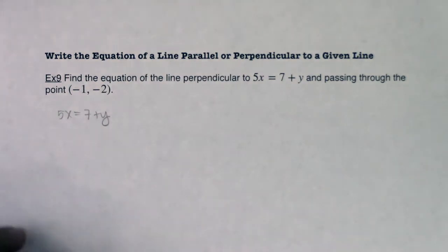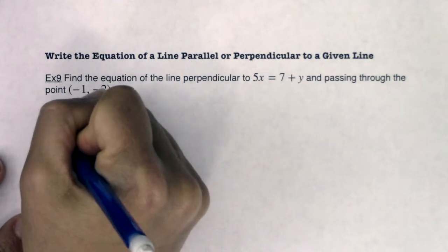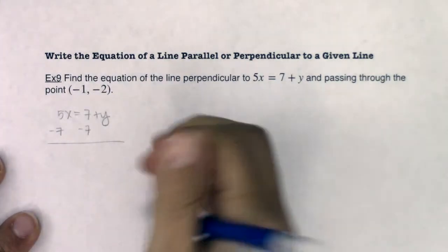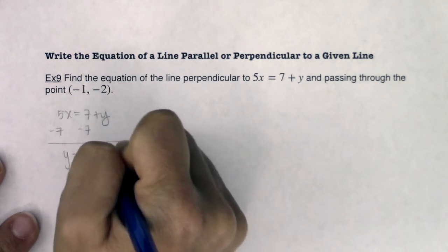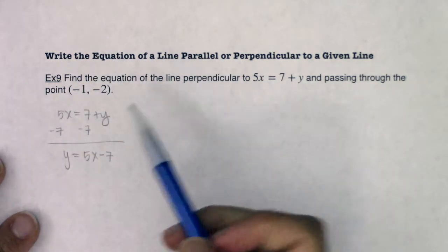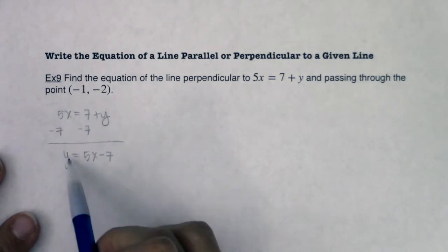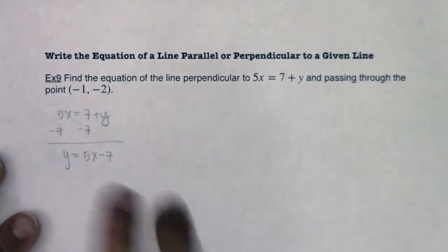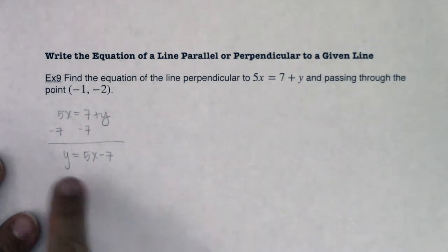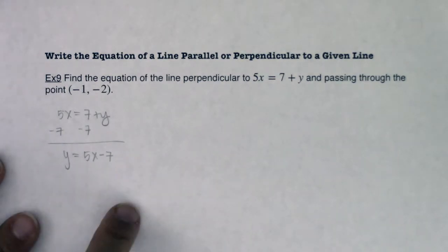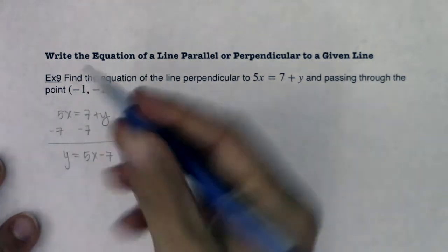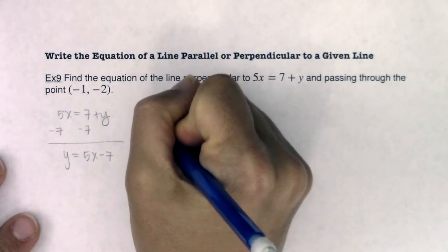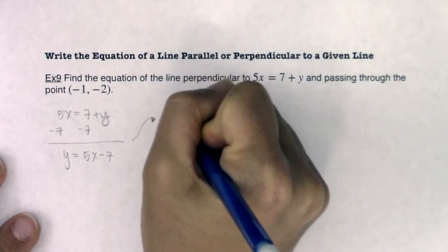I'm going to work this into slope intercept form because I'm more comfortable with that. If I subtract 7 from both sides, I'm going to ultimately have y equaling 5x minus 7. And yes, I get that the y should have been on the right side and 5x minus 7 on the left, but I want to flip the order of that. Two things that are equal, I can write them in any order. So I'm going to have y on the left side and then I can see mx plus b hanging out here. So at this point,